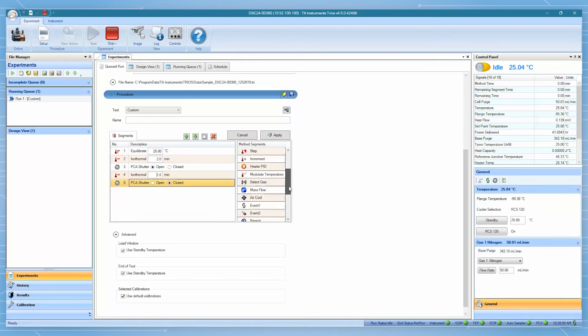Perform isothermal for 3 minutes to get a stable baseline. It may be necessary to increase this isothermal time if the curing peak has not yet reached baseline. You can also do a multi-exposure experiment by adding a repeat segment defining a number of exposures.